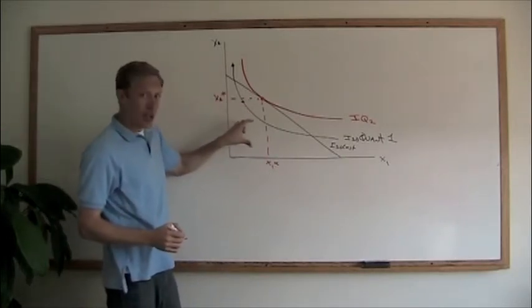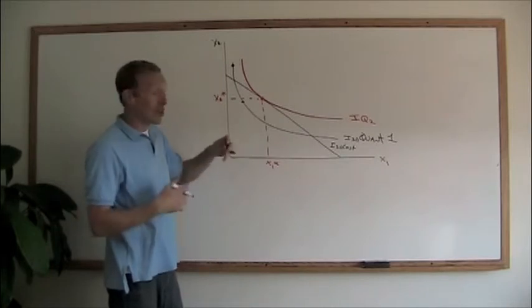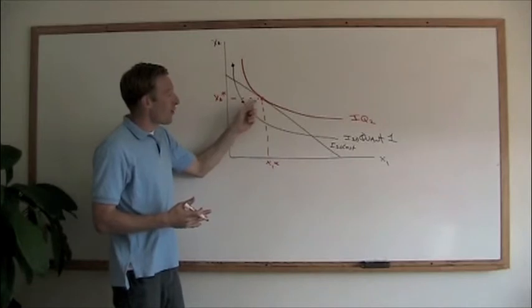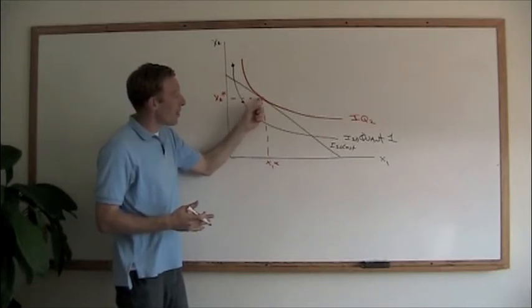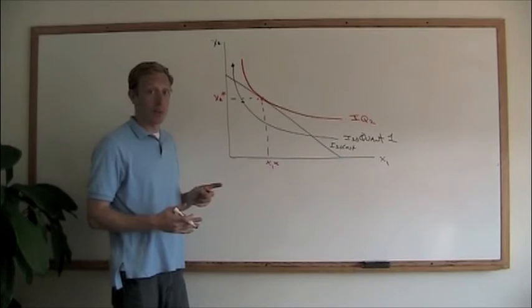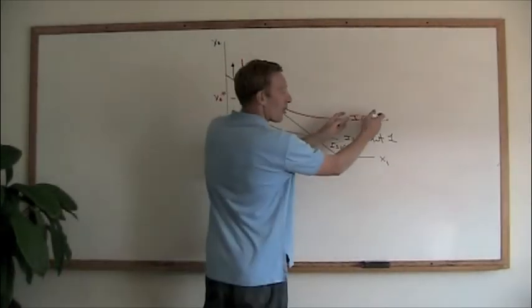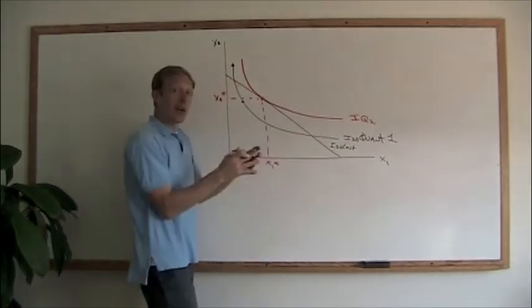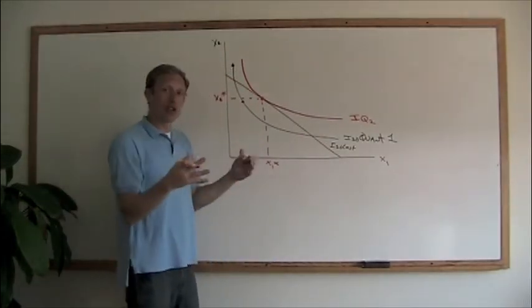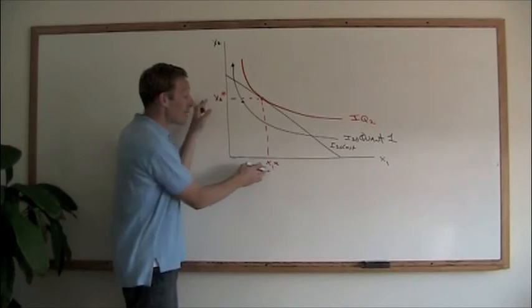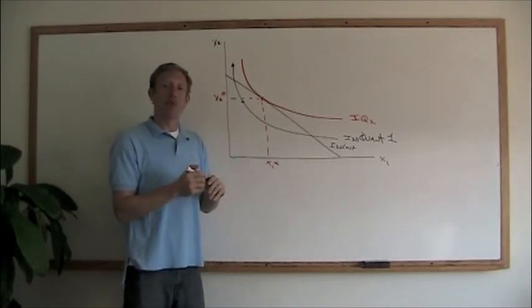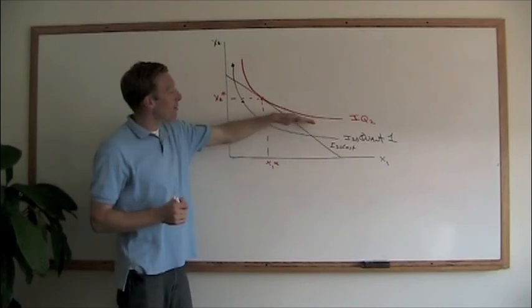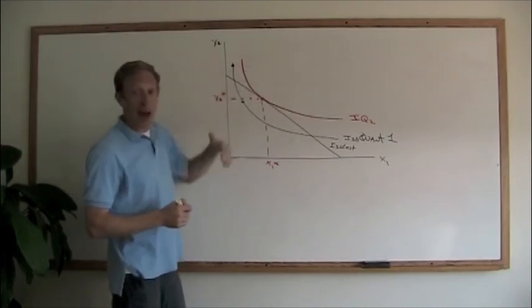We can produce that combination, given our labor and capital mix, in the least costly fashion by producing these two amounts on that isocost. So this is the amount that we want to produce, this is the cost containment, or the force that controls how much we're allowed to spend, and these are the amounts that we can produce, given a labor and capital mix that puts us on this isoquant and that isocost.